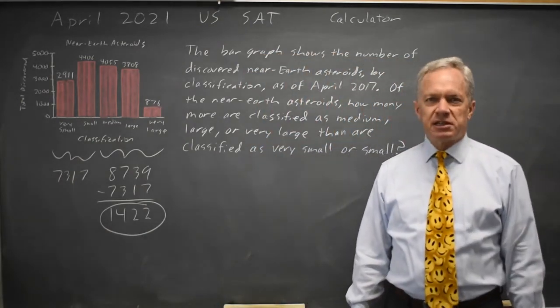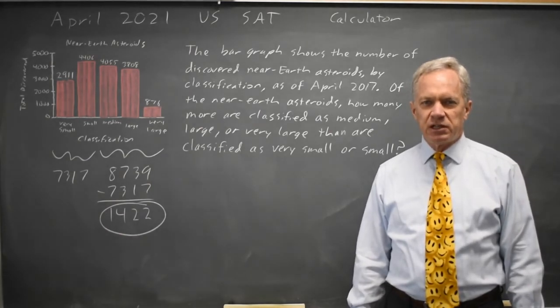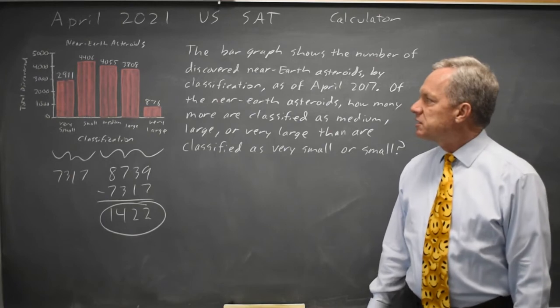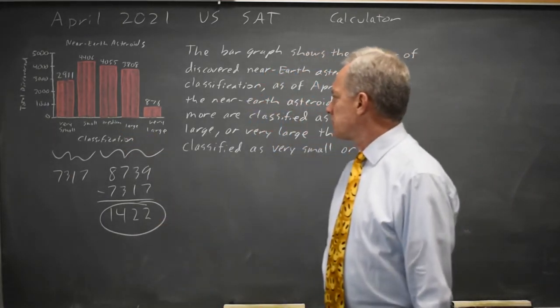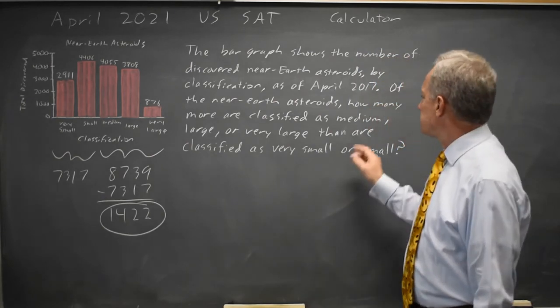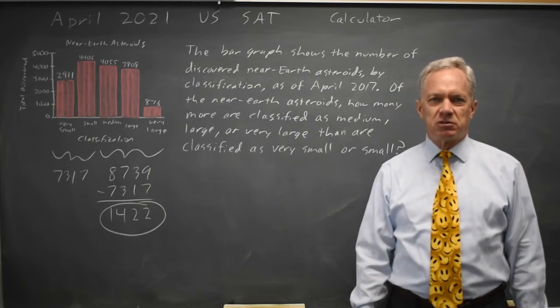The College Board typically does ask you to interpret data from a histogram or bar graph, but in this case it's very easy to do. We just need to group our categories correctly and answer their question, which was how many more medium, large, or very large than very small or small.